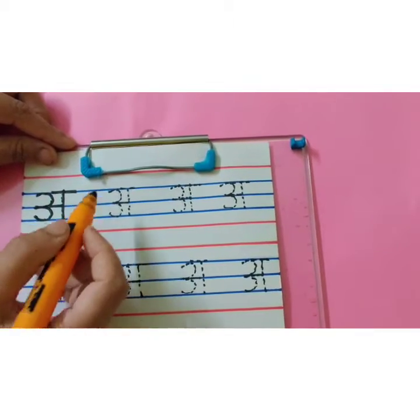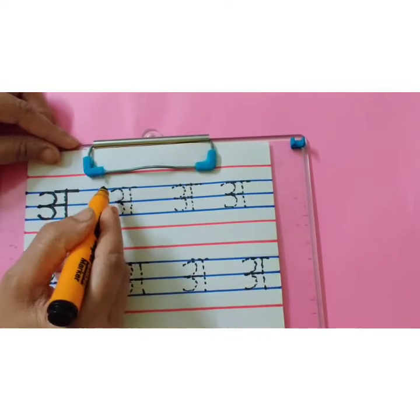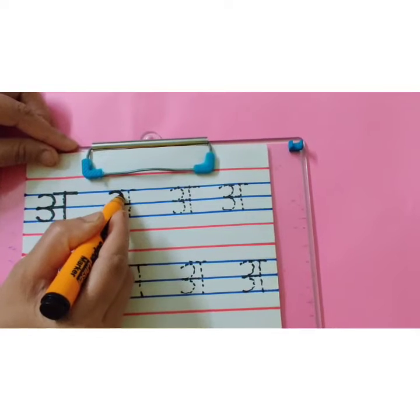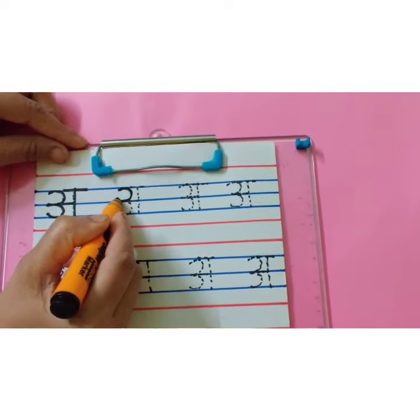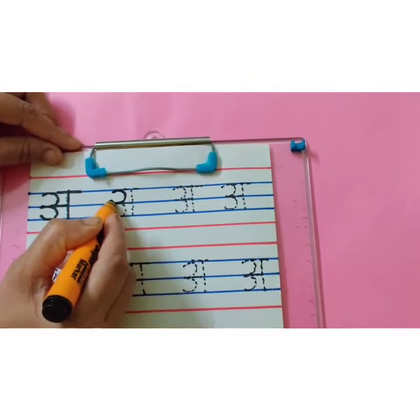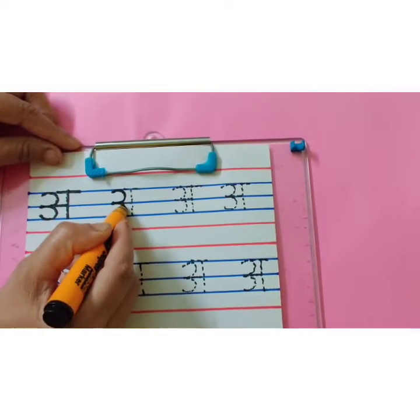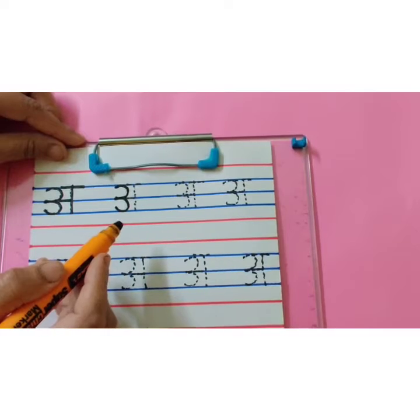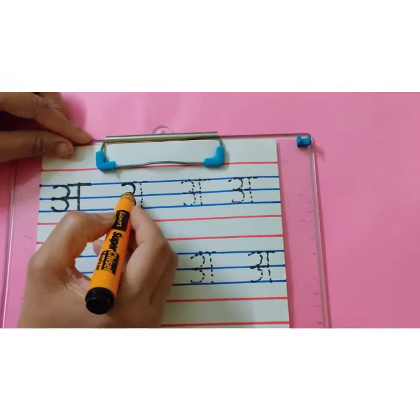Part 2. Now, let's revise how to write 'a'. Start with the first blue line. Write ulta c. Touch the second blue line. Another ulta c. From second blue line to third blue line. This looks like number 3.